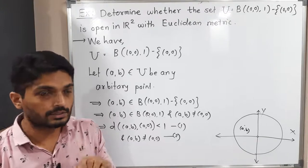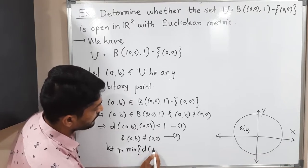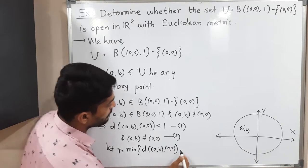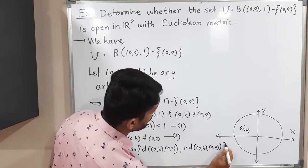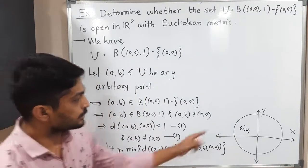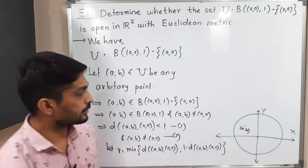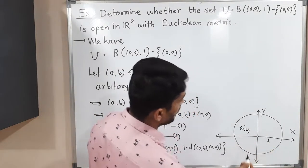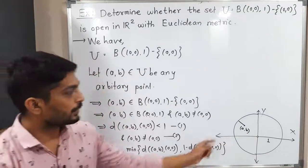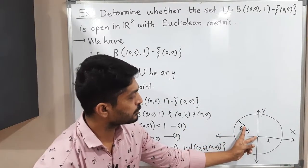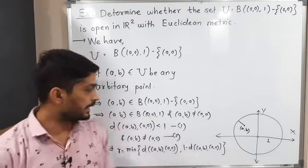Now we have to find a ball around (A, B) which is a subset of set U. For that we need to find a radius. So let R equal to the minimum of d((A,B), (0,0)) and 1 minus d((A,B), (0,0)). The first part is the distance of (A,B) from (0,0), and 1 minus that distance means: since the radius of the big circle is 1, subtracting this distance gives the gap to the boundary. The minimum of these two values is our R.